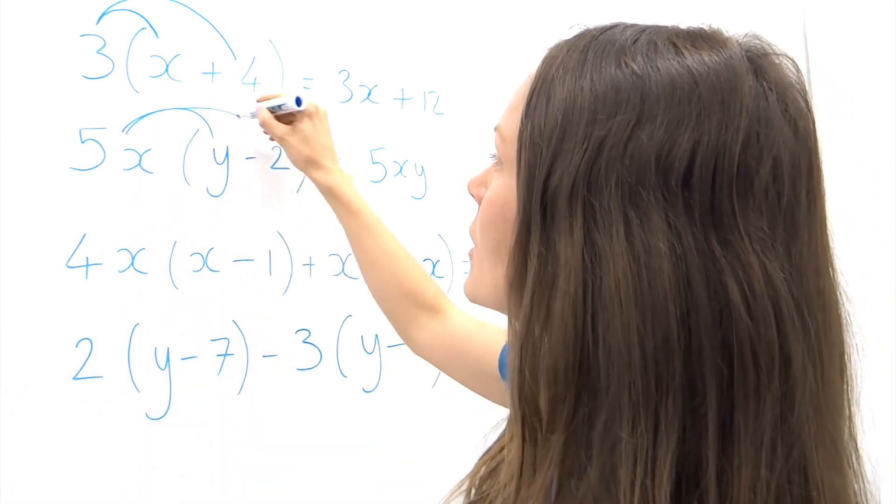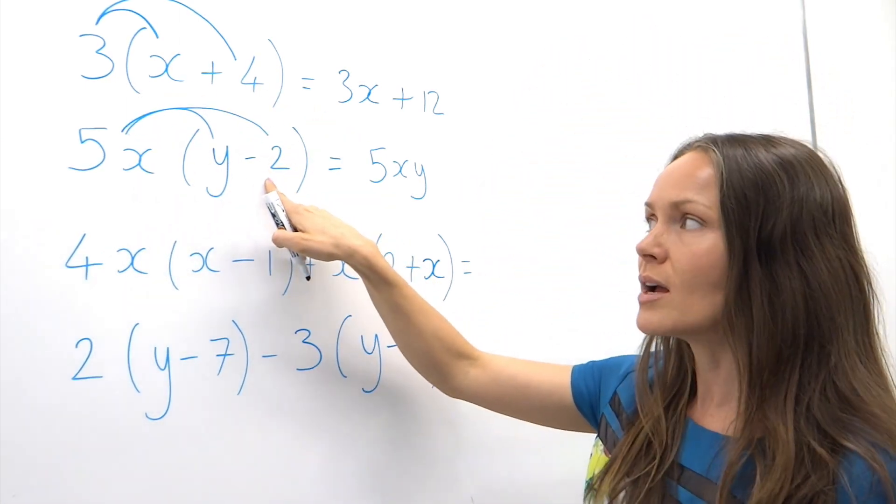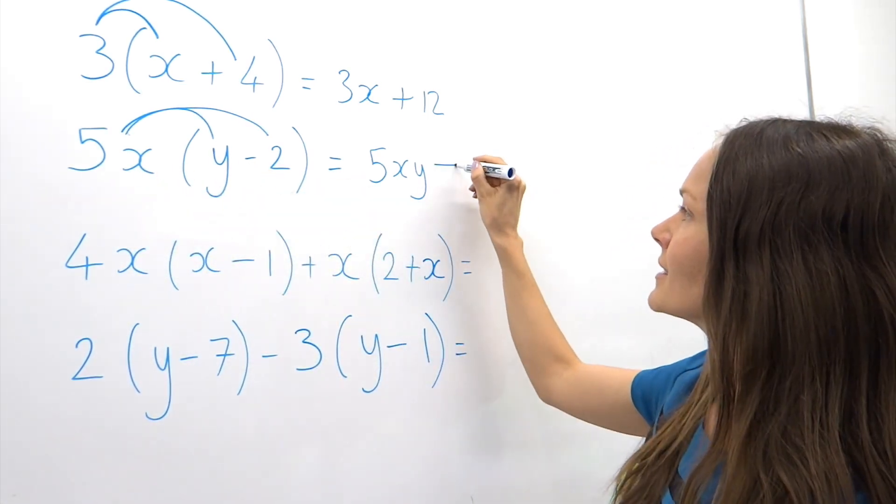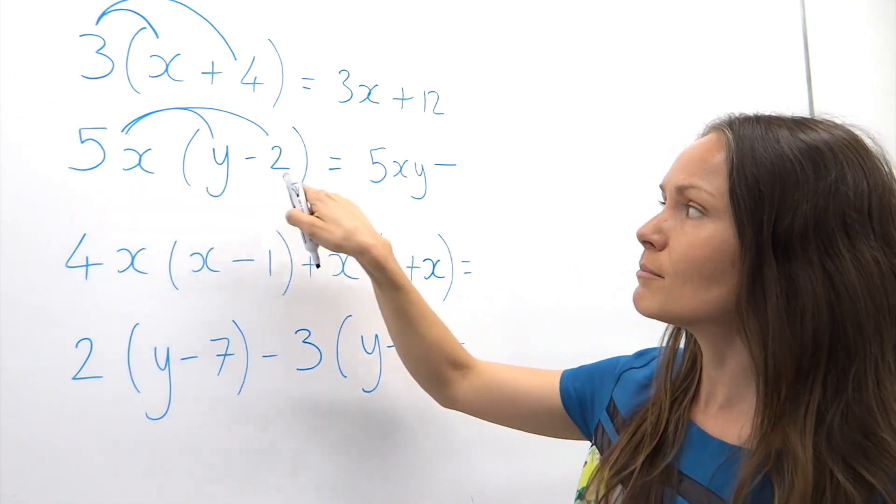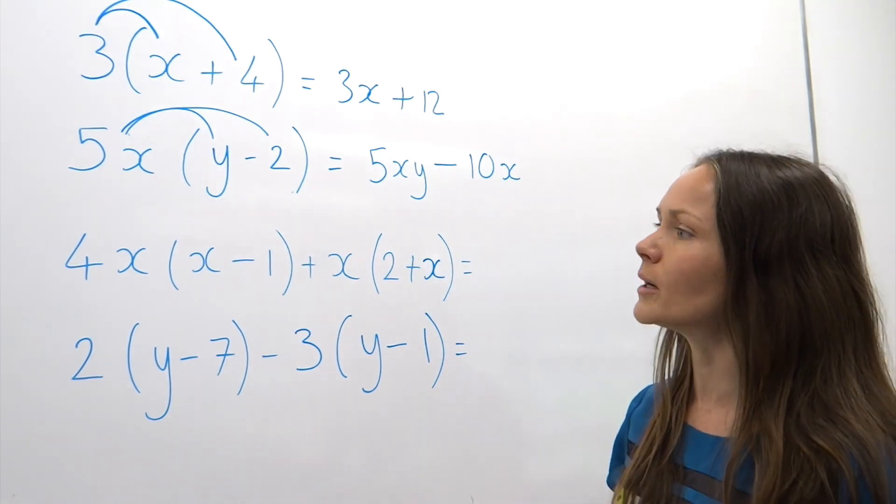Step number two: 5x multiplied by negative 2. A positive multiplied by a negative gives us a negative, and 5x multiplied by 2 is 10x. So that one's done as well.